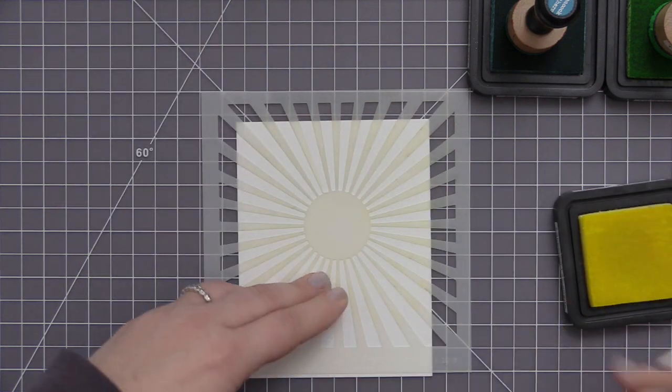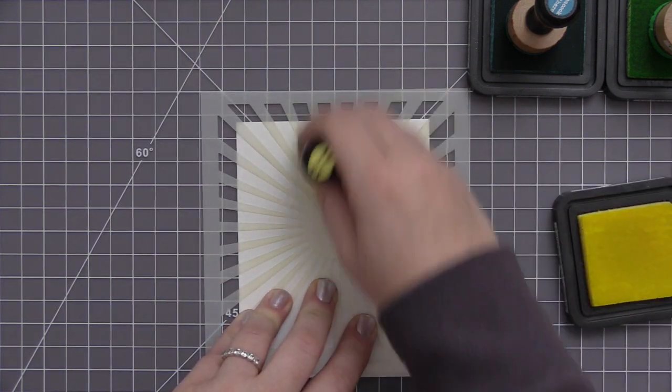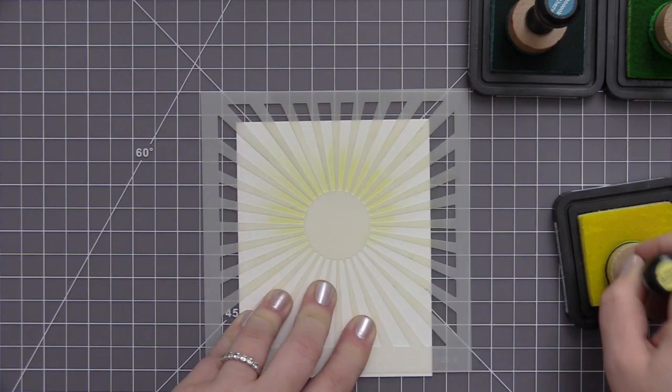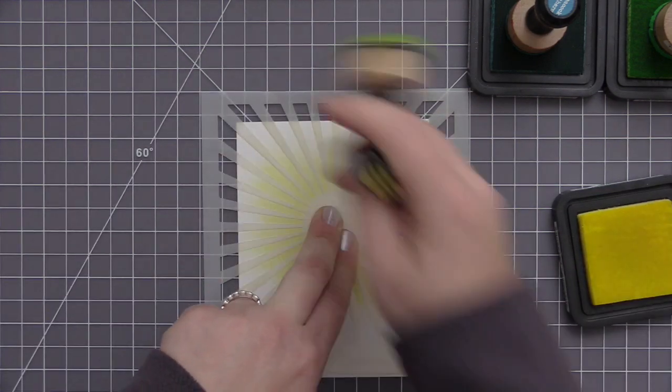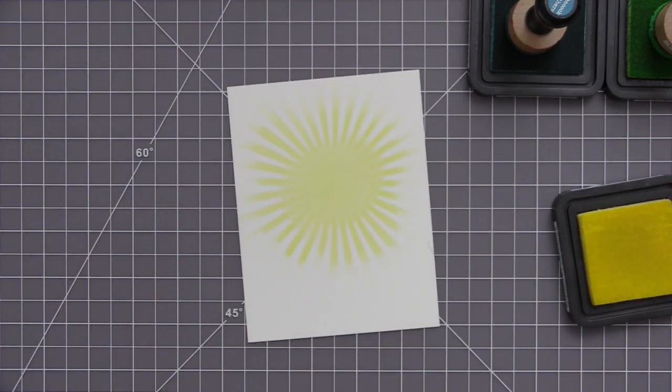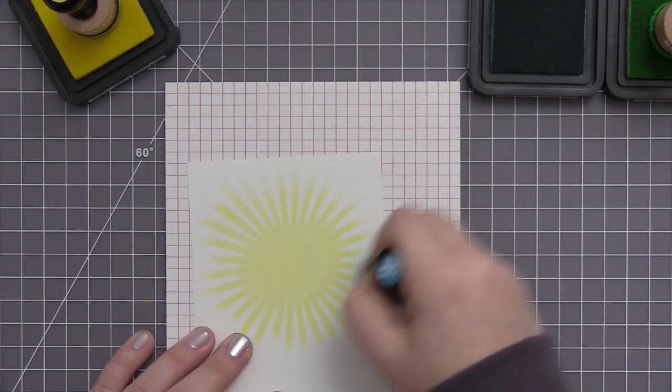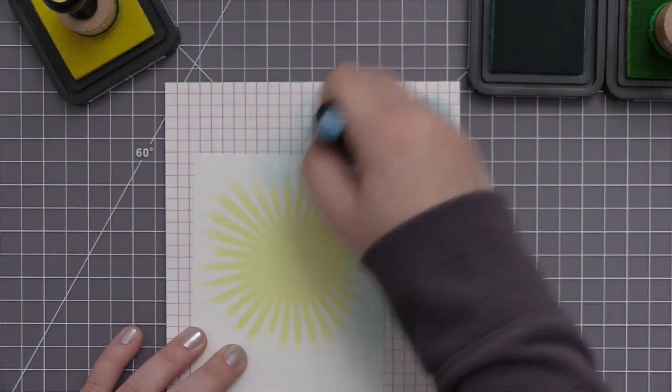So to start off I'm going to create the panel that's going to form the front of our card. I have the radiating ray stencil positioned in the center top area of the panel and I'm just using some squeezed lemonade distress ink and adding color through that stencil, so I have this really nice sun effect in the center now.